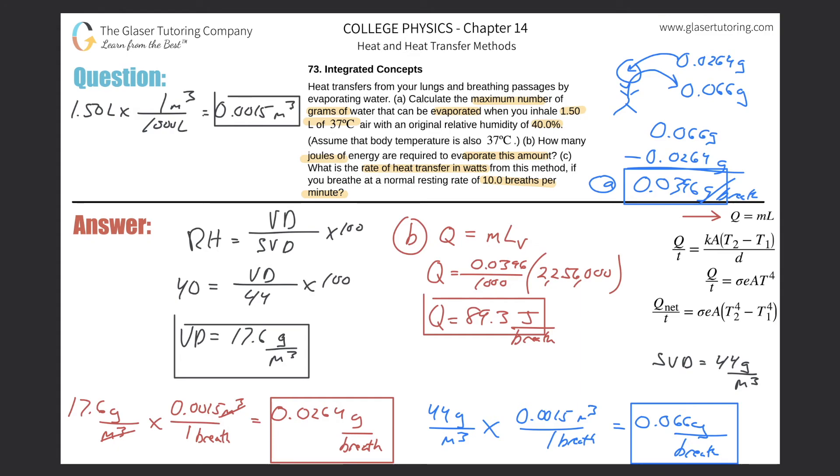Now, if I start with that value, if I do a little dimensional analysis here, complicated name for just conversion. 89.3 joules per breath. And I know I'm breathing at 10 breaths per minute. I know I got to somehow get this into watts. The key idea is to realize that a watt is simply a joule per second. That's what you're looking for. So I got to cancel breaths. Breaths have to go on the top. 10 breaths per one minute.